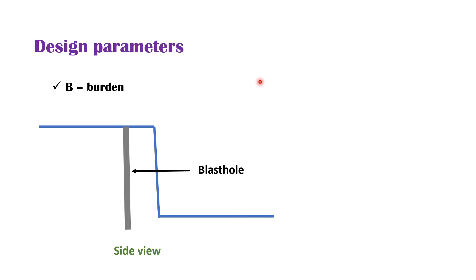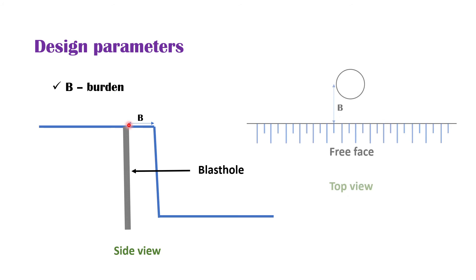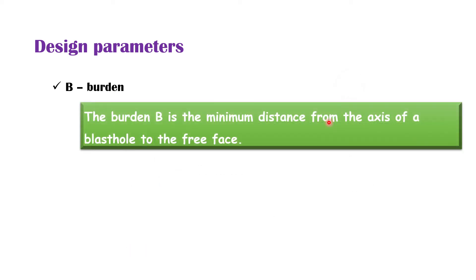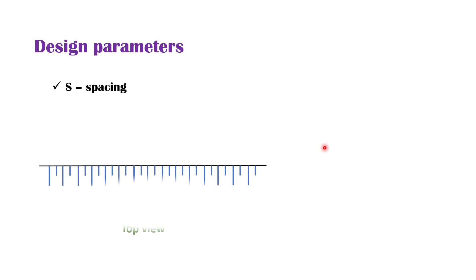The next design parameter is burden. This is the same open cast bench scenario and this is the blast hole. The distance from the free face to the axis of the blast hole is called the burden distance, which can also be seen from the top view. The distance from the axis of the blast hole to the free face is called the burden. The burden is the minimum distance from the axis of a blast hole to the free face.